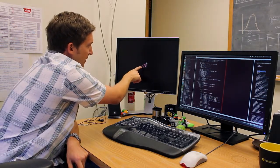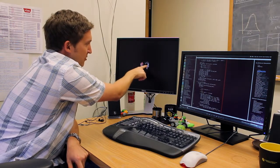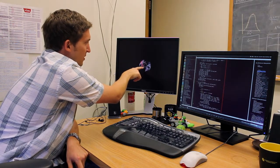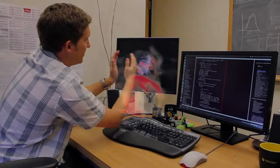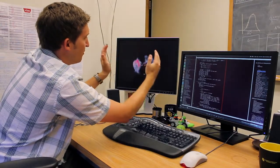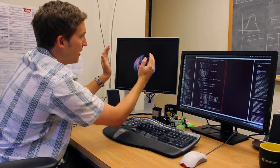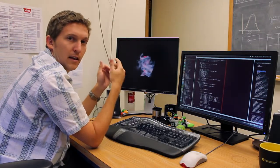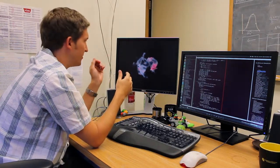I'm now zooming in on this region that has particularly strong emission that looks very reminiscent of a lot of radio relics which are observationally defined and observed by many radio telescopes. And so we see that you have these two outward moving shocks that are accelerating electrons and leaving behind a wake of synchrotron emission.